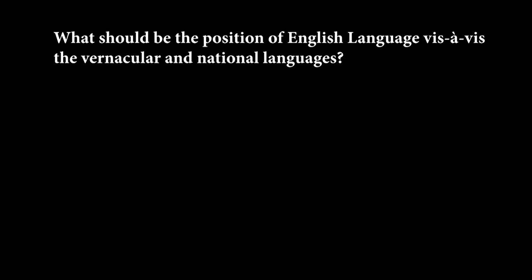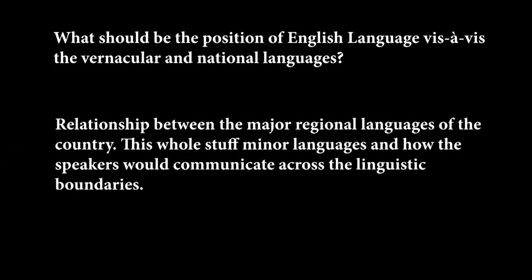In pre-independence India, a crucial language issue was the relative status of Hindi and Urdu and the Devanagari and Persian-Arabic scripts. Another point of controversy was the status of English vis-à-vis the vernacular and national language. A further problematic was the relationship of major regional languages with the host of minor languages and how speakers would communicate across linguistic boundaries. These were the issues the constituent assembly had to face.